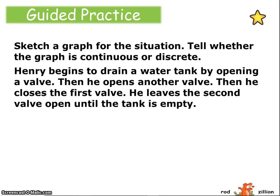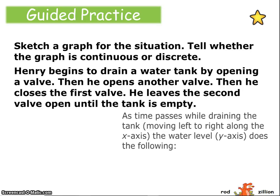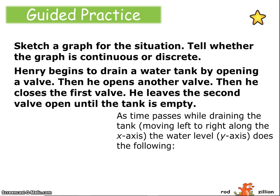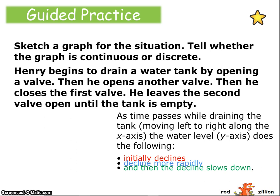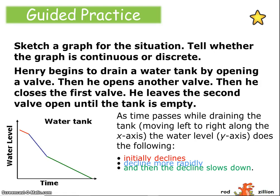We're comparing the amount of water in the tank over the course of time. So this graph may look something like this. Initially it's going to decline. Then it's going to decline more rapidly because he opened up the second valve. And then the decline is going to slow down because he closes the valve and leaves only the second valve open. Thus this graph. Now is this continuous or discrete? We've got a line here, not distinct points, but a continuous line. So this is a continuous graph.